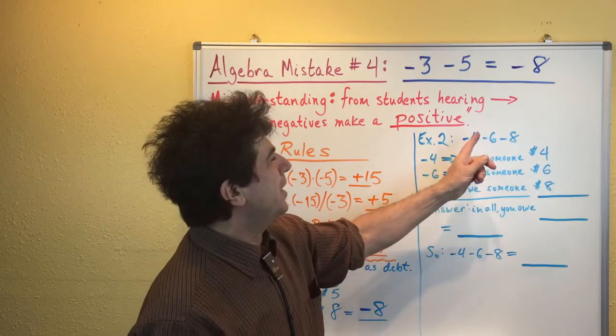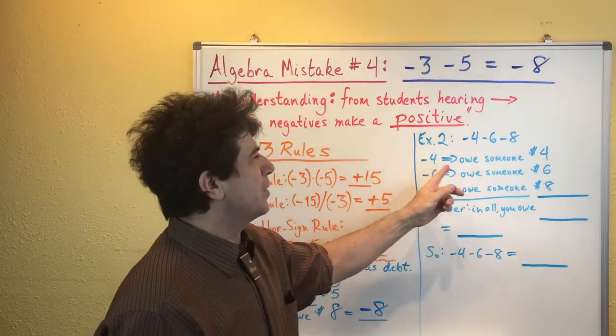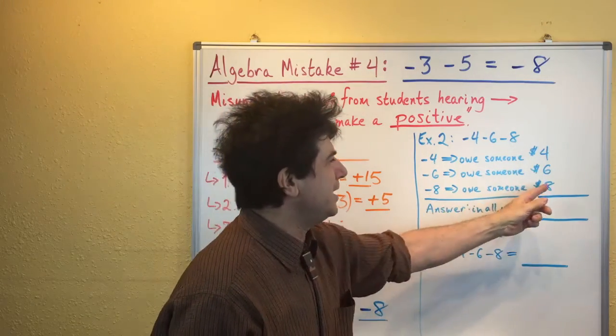If you've got negative four, negative six, and negative eight. Okay, so the negative four means we owe someone four dollars. The negative six, we owe someone six dollars. The negative eight, we owe someone eight dollars.